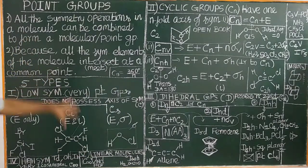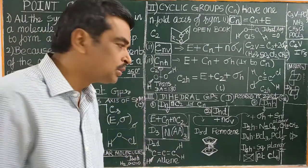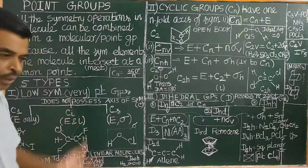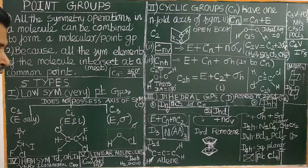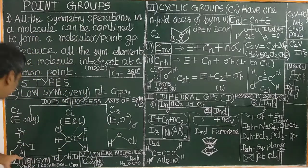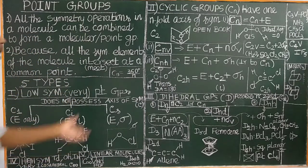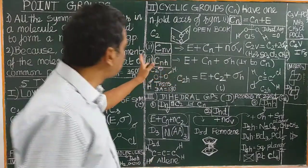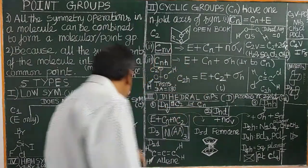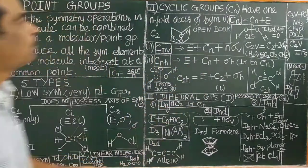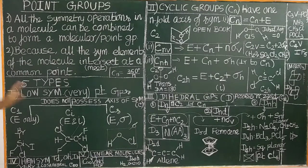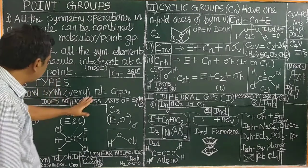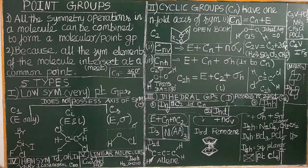There are five types of point groups. Let us see: very low symmetry point groups, very high symmetry point groups, cyclic point groups, dihedral point groups, and linear molecule point groups. First, very low symmetry point groups.